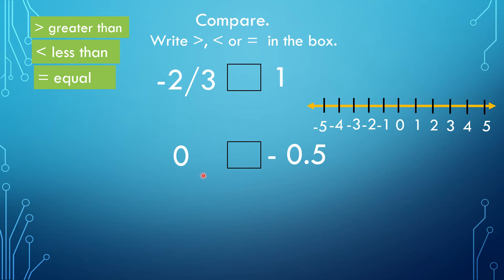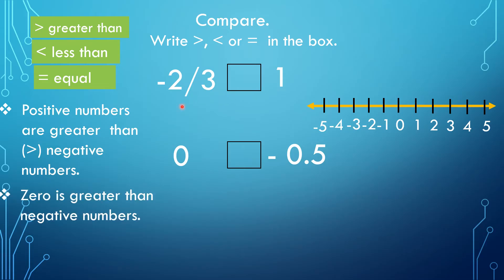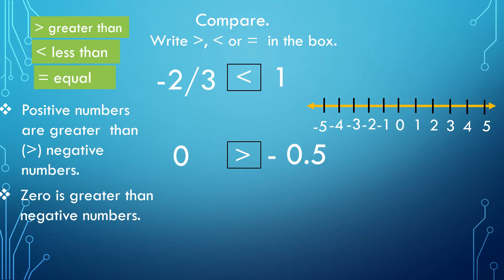Now let's look at this one. Remember that positive numbers are greater than negative numbers. I have a fraction, negative 2 thirds, but I have a positive number here, and positive numbers are greater. Therefore, negative 2 thirds is less than 1. Here I have 0 and negative 0.5. Note that negative 2 thirds and negative 0.5 are not integers — we are just comparing integers to other numbers. Since negative 0.5 is negative, 0 is on the right of negative numbers, so 0 is greater than negative 0.5.